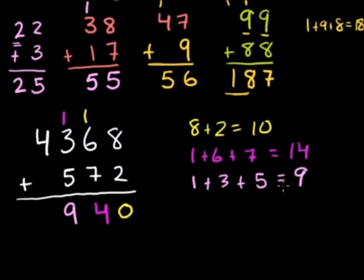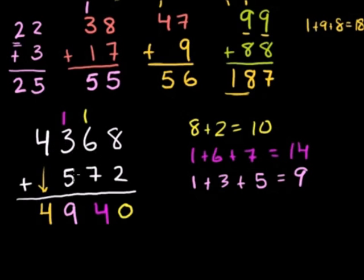9 is just 9 pennies, no dimes. Then we go to the thousands place — nothing to add to the thousands place, so you just take this 4,000 and bring it straight down. So 4,368 plus 572 is 4,940.